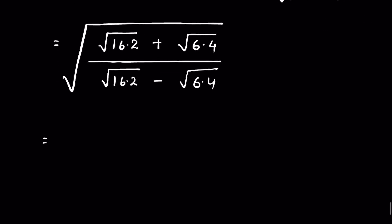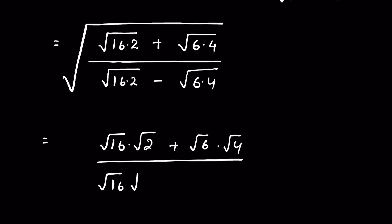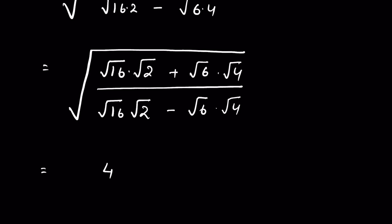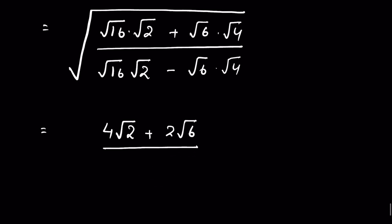So we can write: square root of 16 times square root of 2 plus square root of 6 times square root of 4, upon square root of 16 times square root of 2 minus square root of 6 times square root of 4, all under a square root. Square root of 16 is 4, so 4 times square root of 2, plus square root of 4 is 2, so 2 times square root of 6.